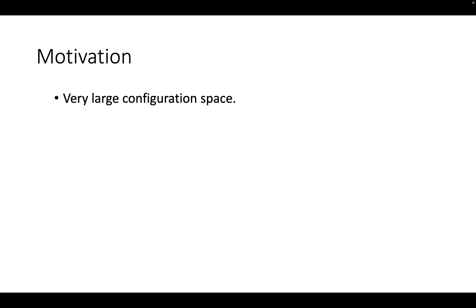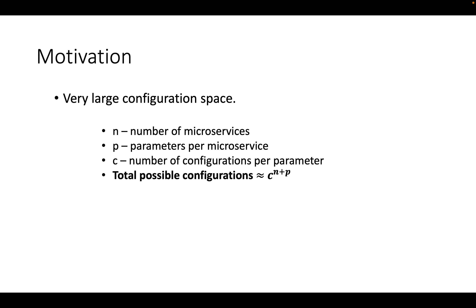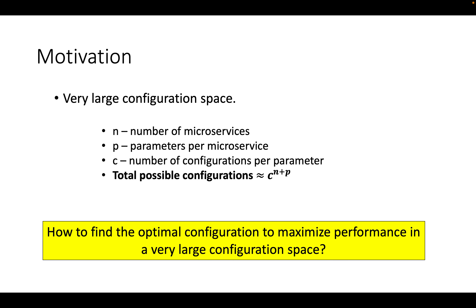Another important challenge is that the configuration space is extremely large in microservices applications. Let's consider there are N number of microservices in our application. For simplicity, let's assume there are P parameters per microservice and each of these parameters can take up C configurations. This makes the total possible configurations C to the power of N times P. Since modern microservice applications consist of hundreds to thousands of microservices, this number is extremely large. So how to find the optimal configuration in a very large configuration space?